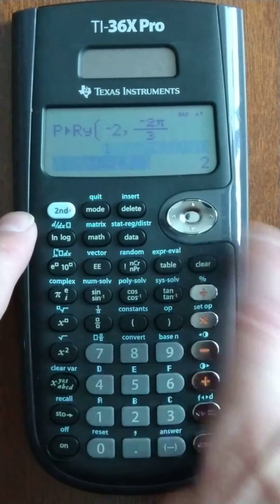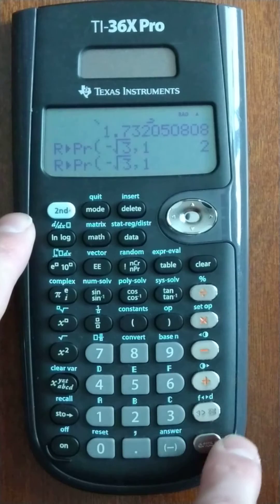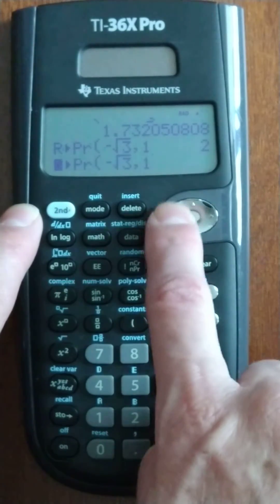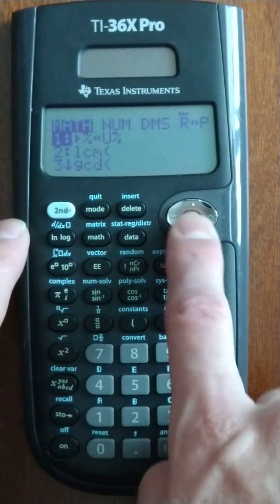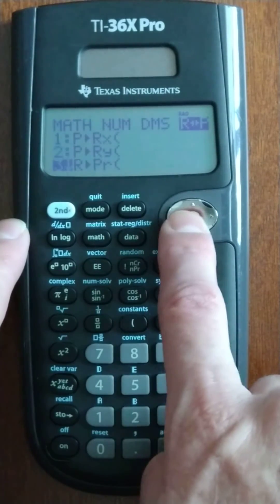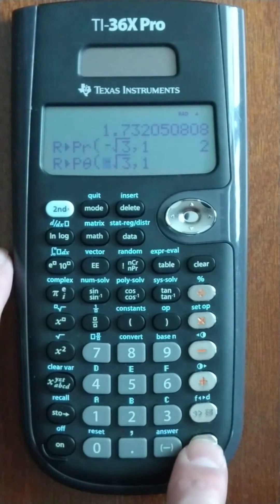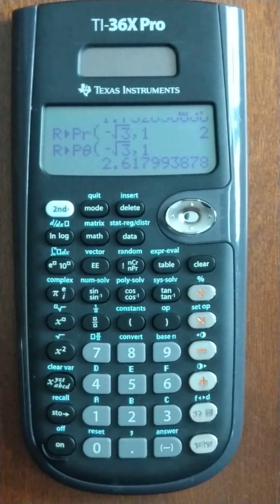And then we can use our same trick we did just a minute ago. Grab this. And I've got to go back. Back, back, back, back, back. And then hit. And this time we're going to go down to get the theta. Rectangular to polar, get the theta. And we get 2.62 radians.